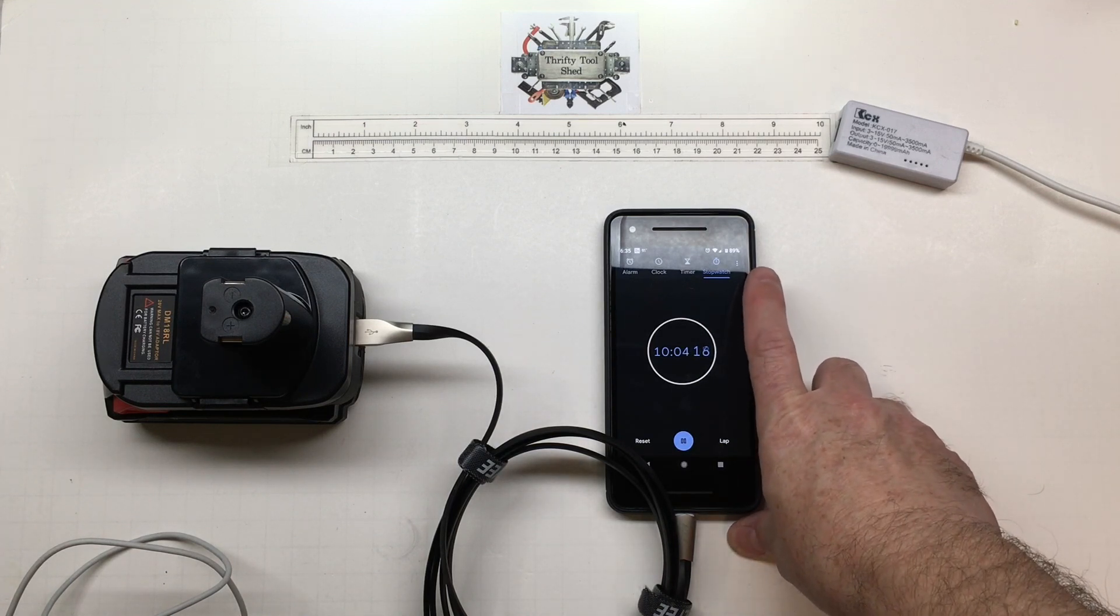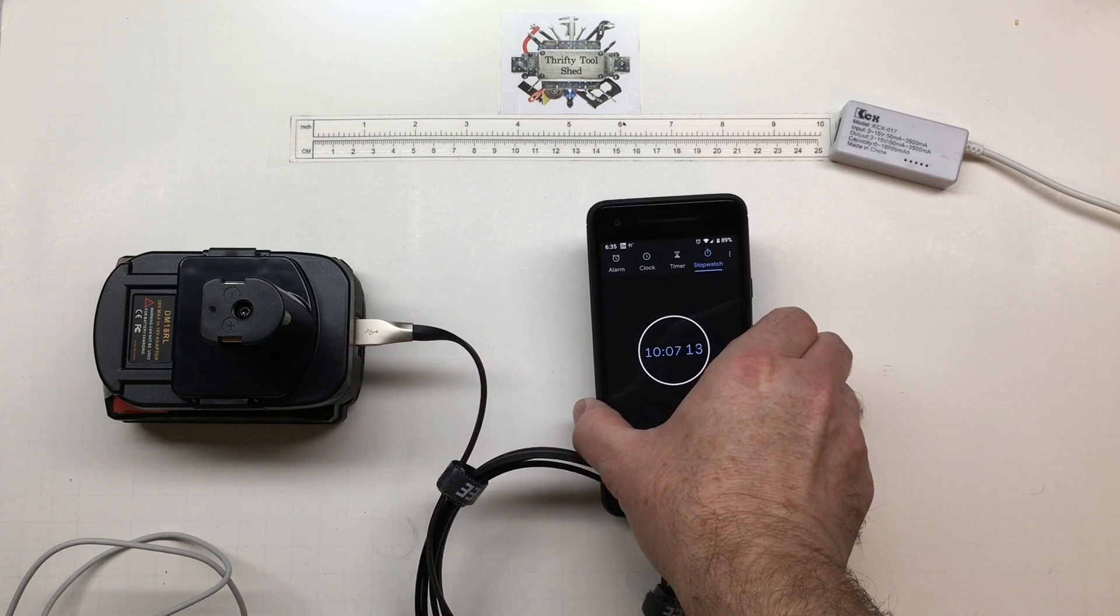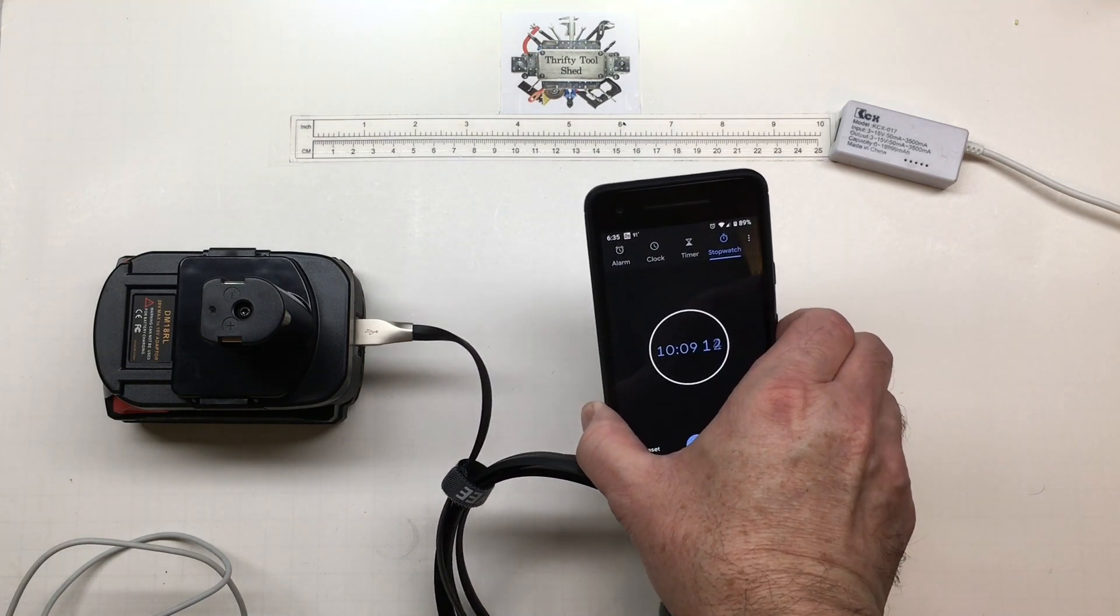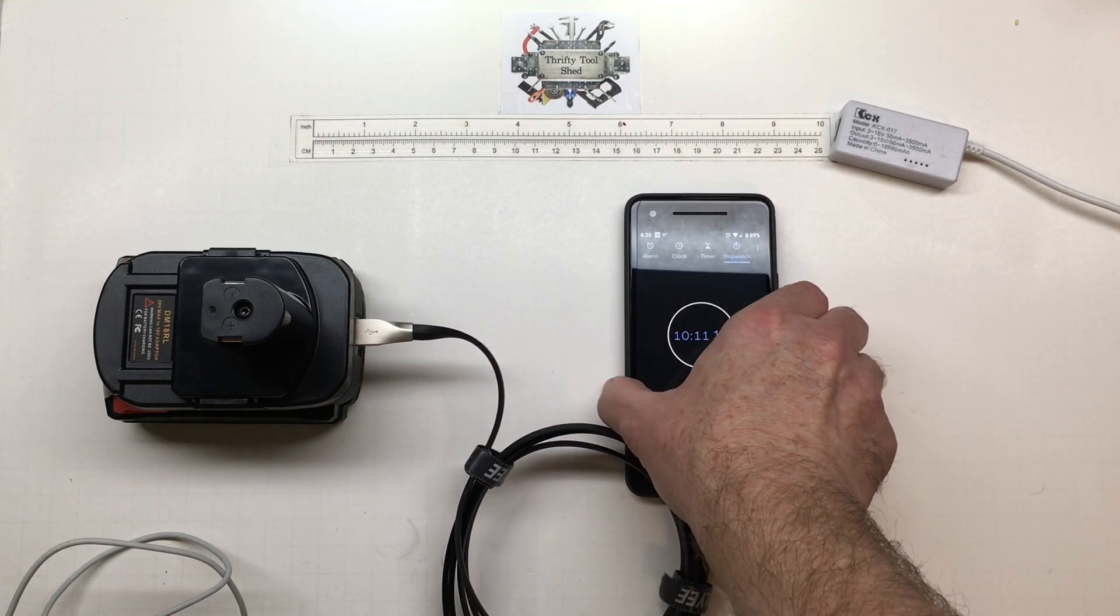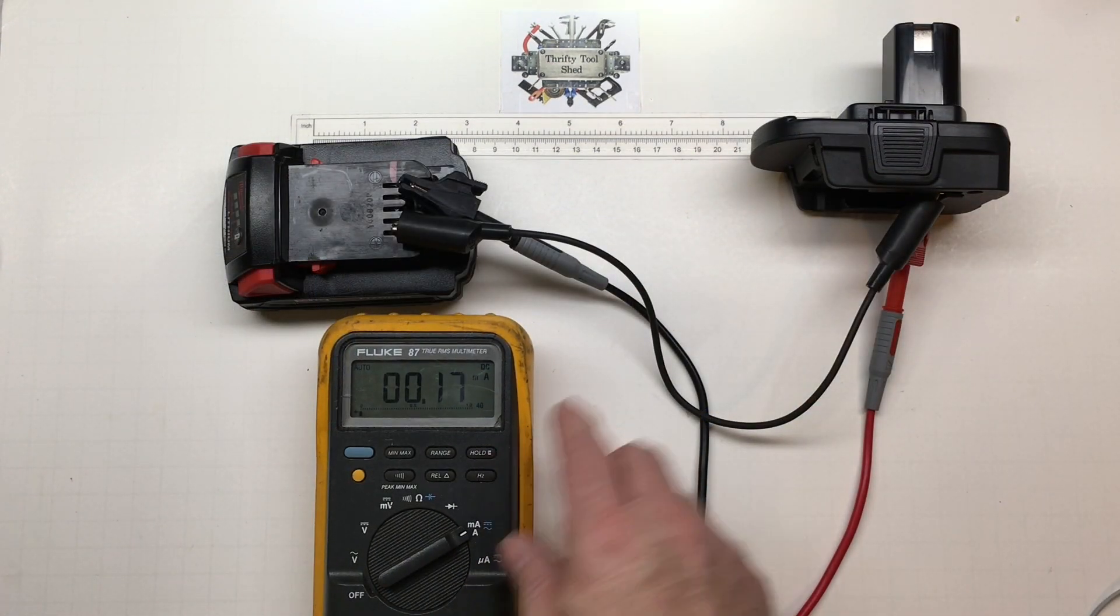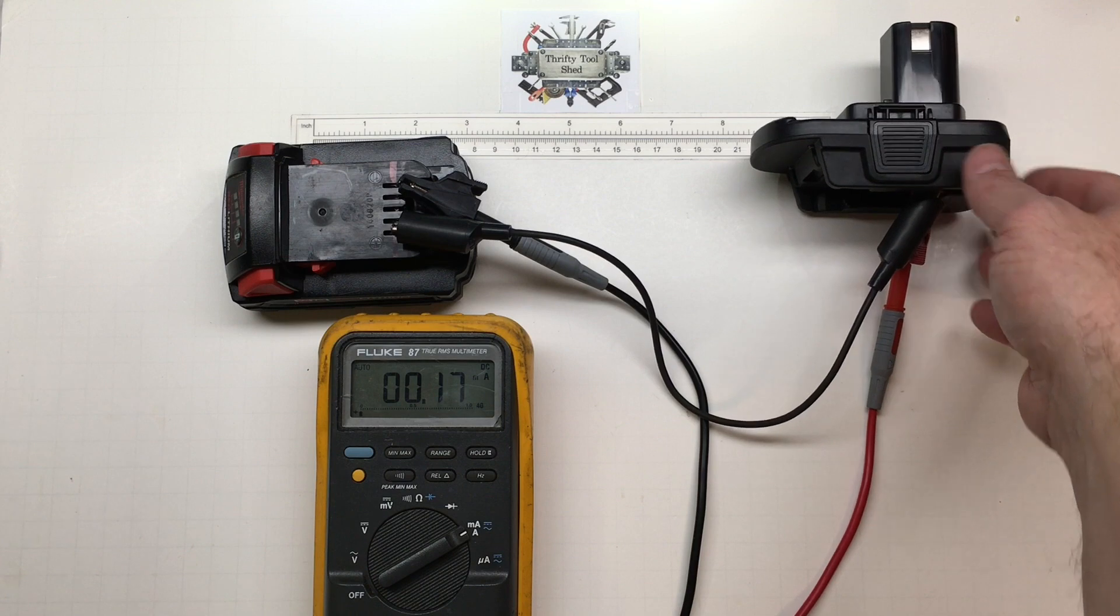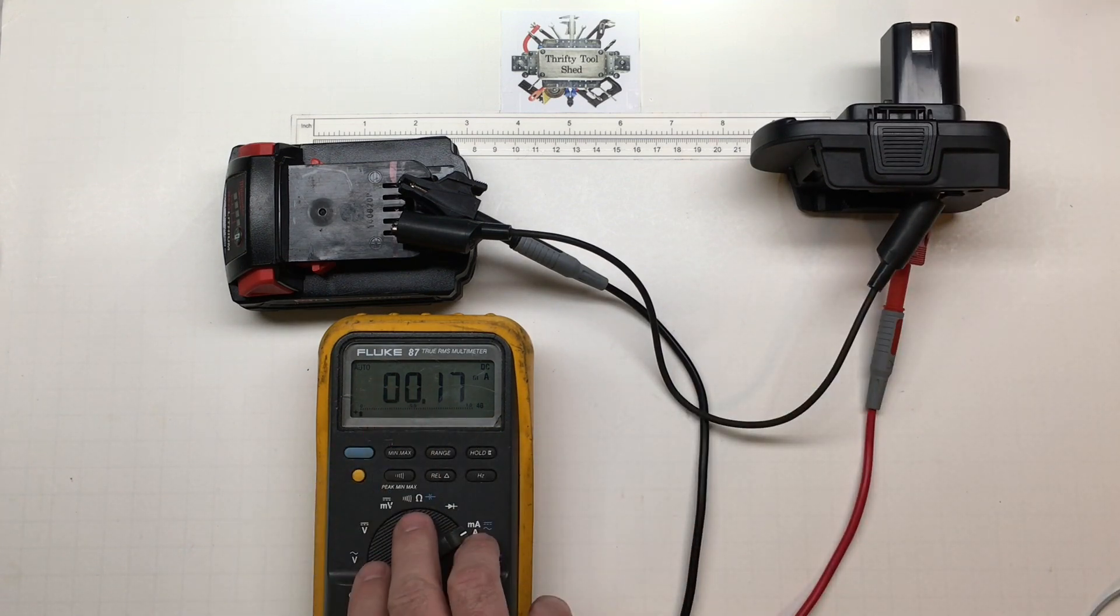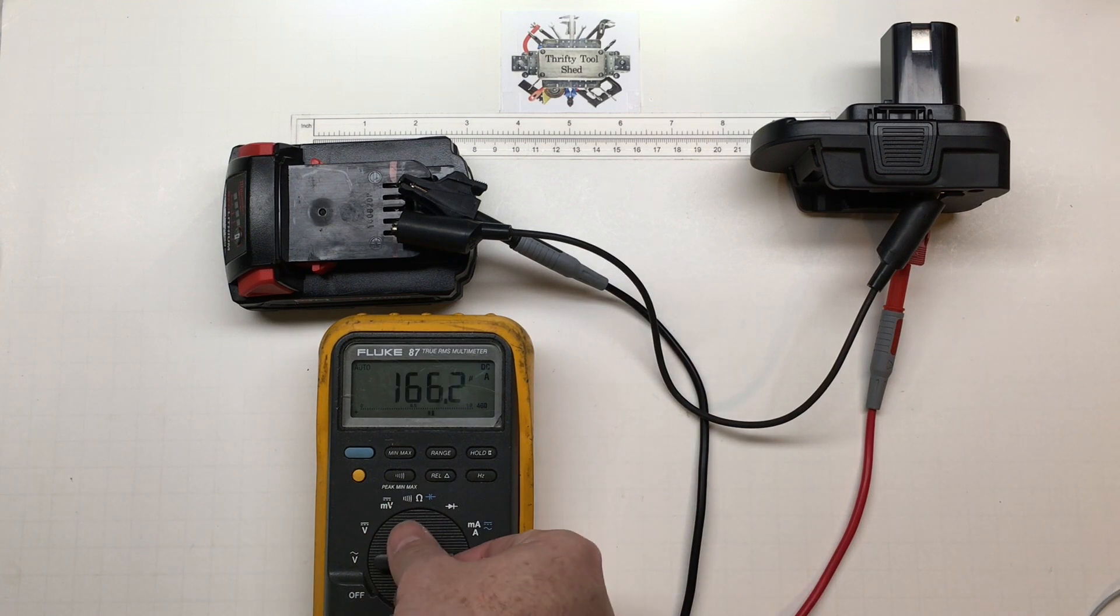Back about 10 minutes later and we've got to 89%, so over a 10% gain. The actual charging part of the adapter seems to work really well. Just doing a quick check here in milliamps with the pack hooked up, the Fluke 87 shows about 170 microamps, showing about 166 microamps at the moment.